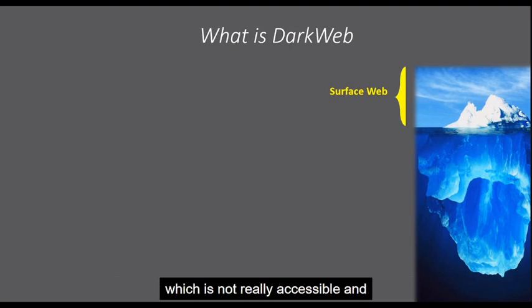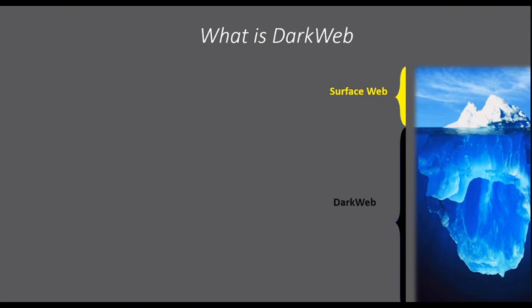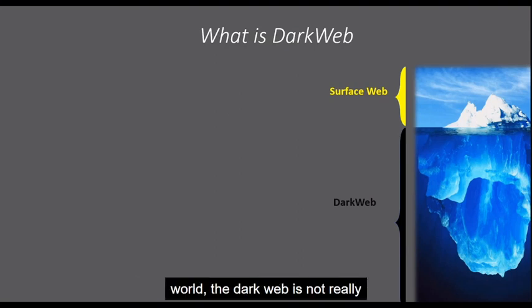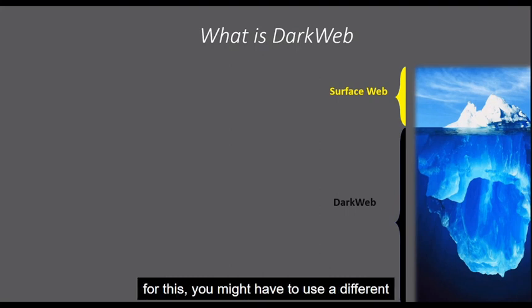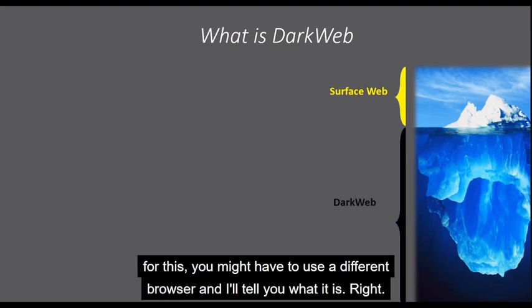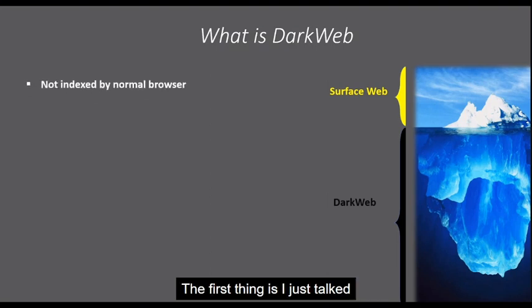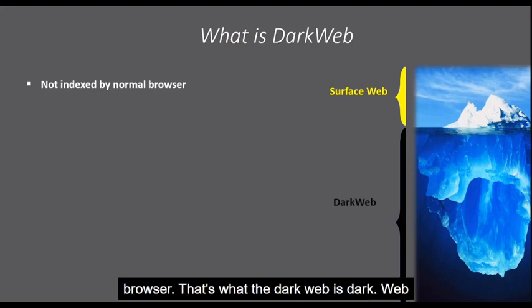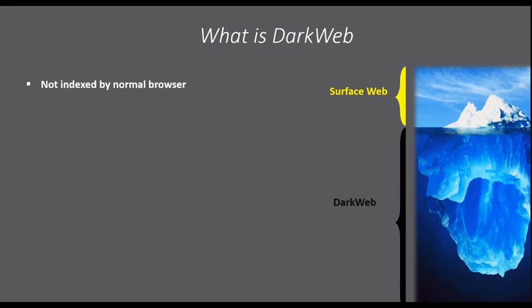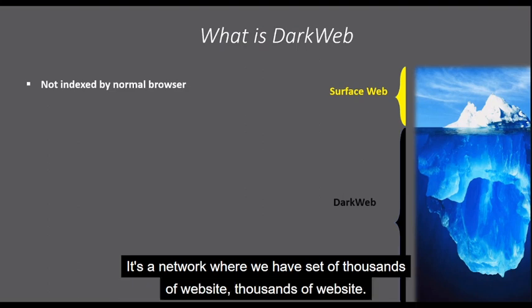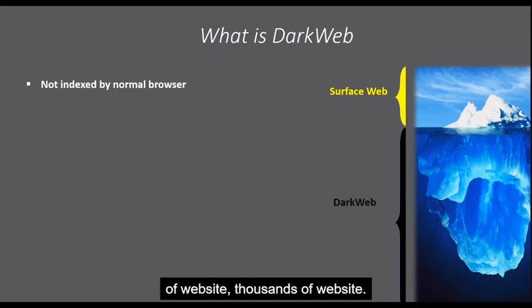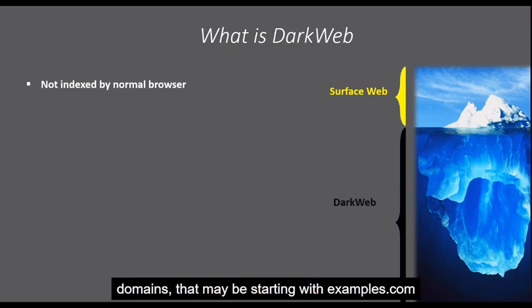What you see on the bottom of the iceberg is something which is not really accessible, and that's where the dark web really comes in. In the real world, the dark web is not accessible by your normal browser — you have to use a different browser. The dark web is basically a network where we have a set of thousands of websites, and these websites end with dot onion.